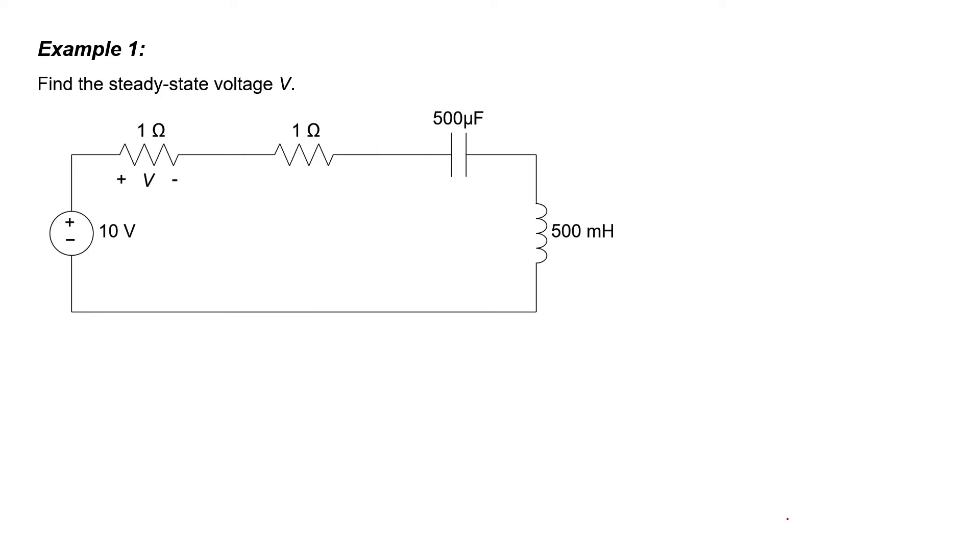In this problem, we're told to find the steady-state voltage V across that resistor. We see capacitors and inductors in this circuit. One way to approach the problem would be to start writing down differential equations, but we can use some important information about capacitors in order to make this problem incredibly easy.